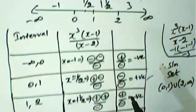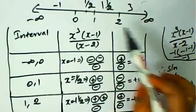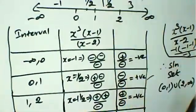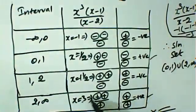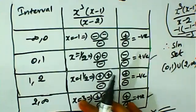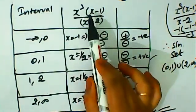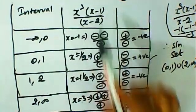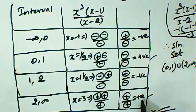For the interval 2 to infinity, we choose x equals 3. Substituting 3: x cubed is plus, x minus 1 is plus, x minus 2 is plus. All three factors are positive, so the overall result is positive.